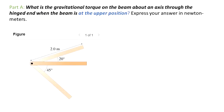First, for part A: what is the gravitational torque on the beam about an axis through the hinged end when the beam is in the upper position? Express your answer in Newton meters. From this question, we already know that we are searching for the torque produced on the beam by the effect of gravity.